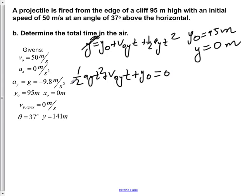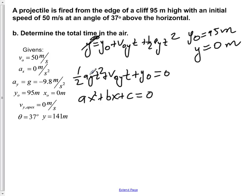This is the standard form of a quadratic equation: a·x² + b·x + c = 0, where T plays the role of x. Here, a equals ½·Ay, b equals v₀y, and c equals y₀. To solve for T we use the quadratic formula: x = (−b ± √(b² − 4ac)) / (2a), substituting our specific values.